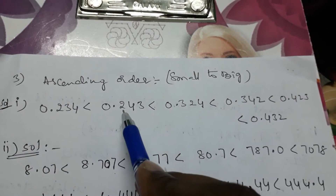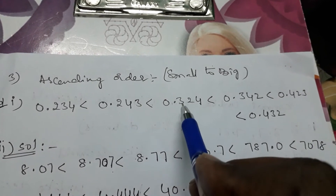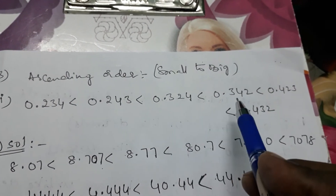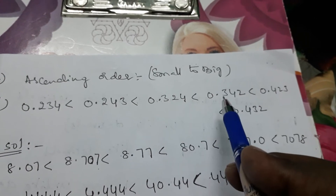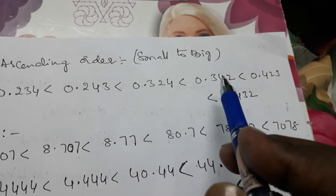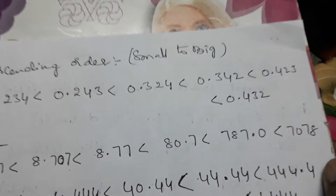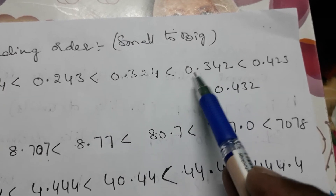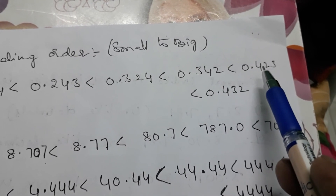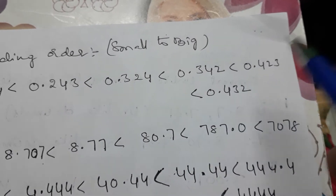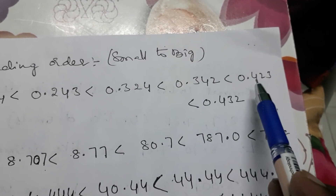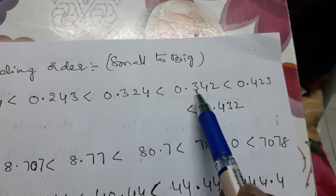When whole number parts are same, check first decimal. If first decimal is different, we can decide there — this one is smaller, this one is greater. If there is confusion and whole number part is same and first decimal is also same, then compare the second decimal. Whichever second decimal is bigger, that decimal number is greatest; whichever is smaller, that is smallest. If whole number part is not same, you can decide right away.